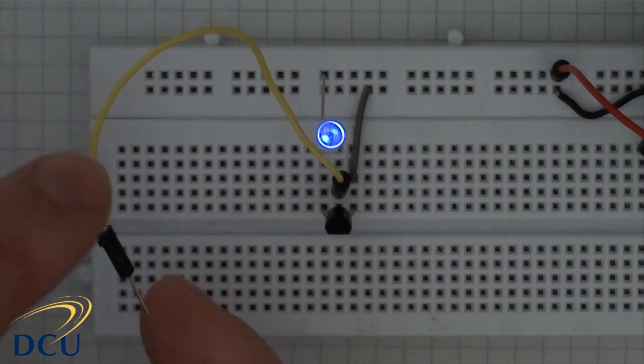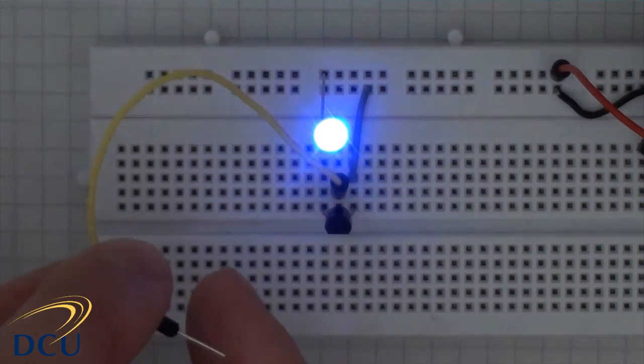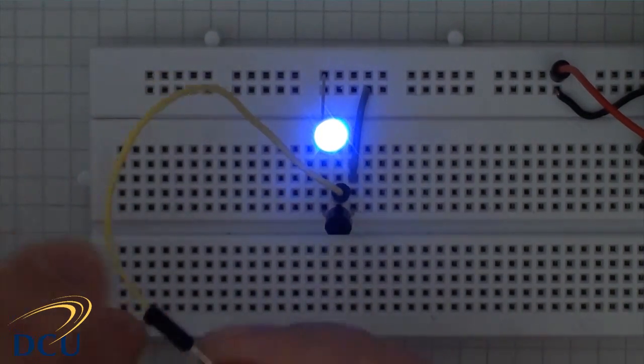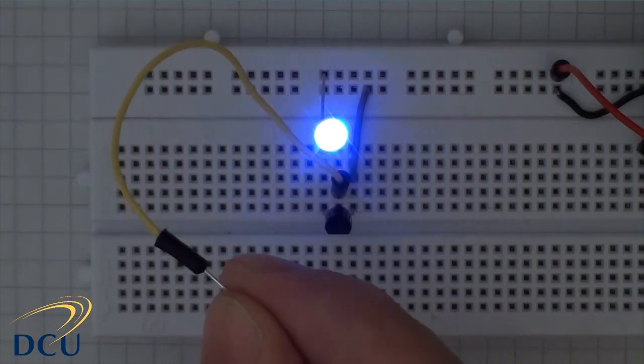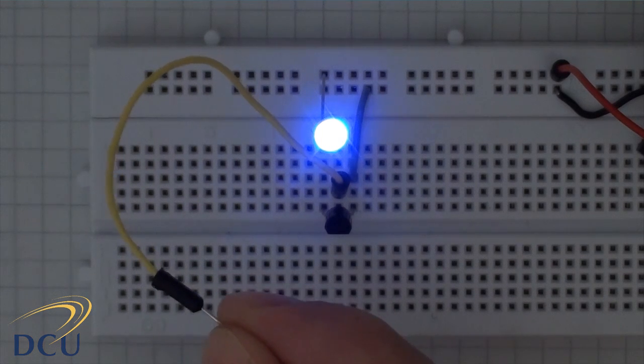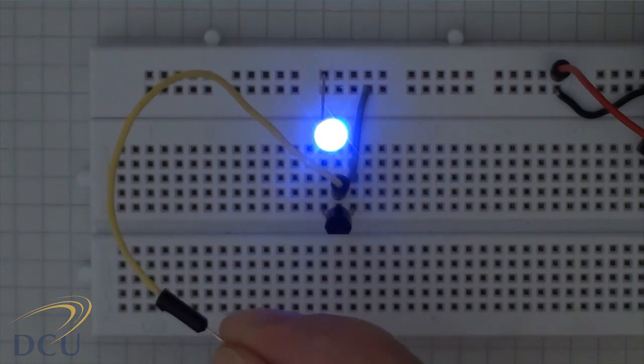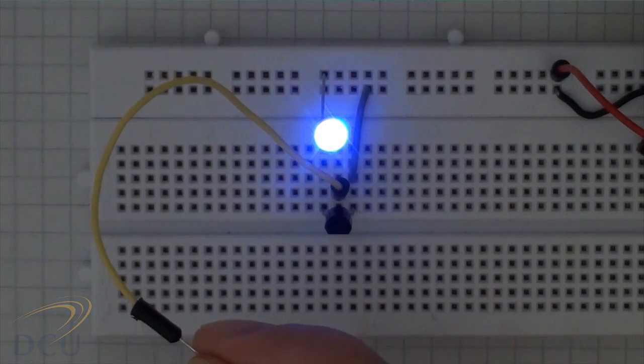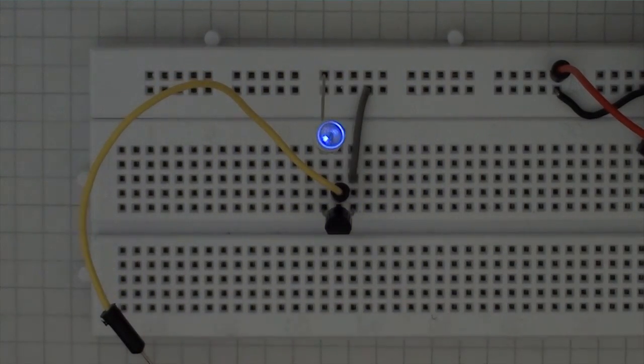If I touch the bare metal of this particular wire, you can see the current in my body is enough to trigger a fairly significant gain across the transistor so we get quite a bright light coming out of the LED.